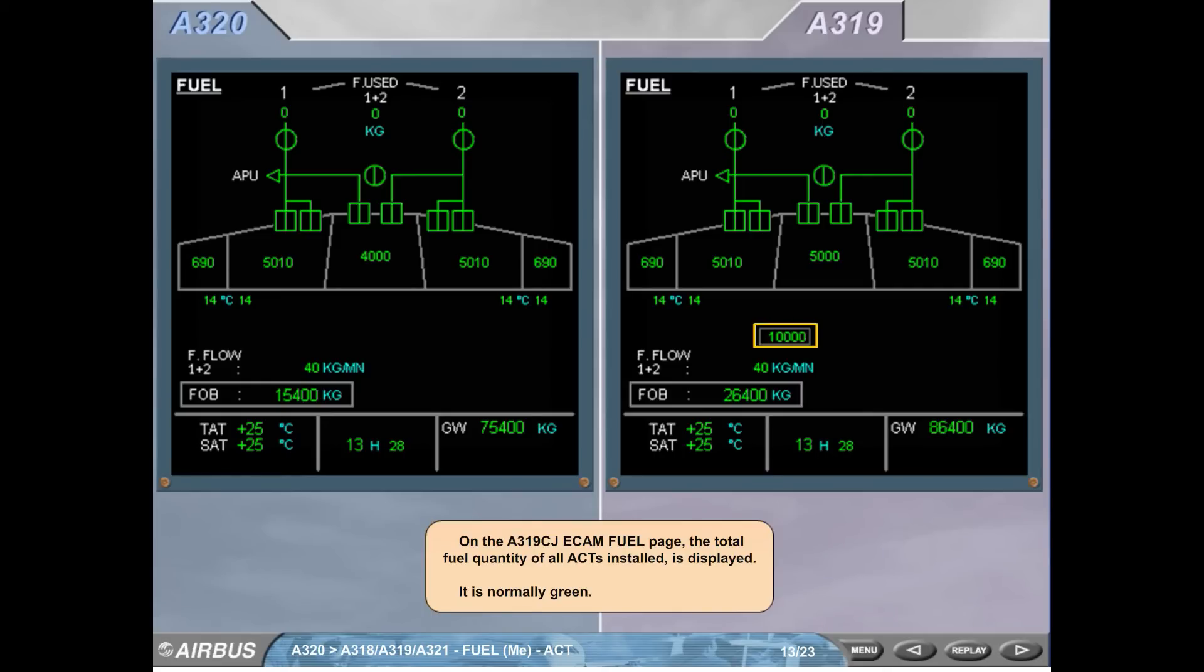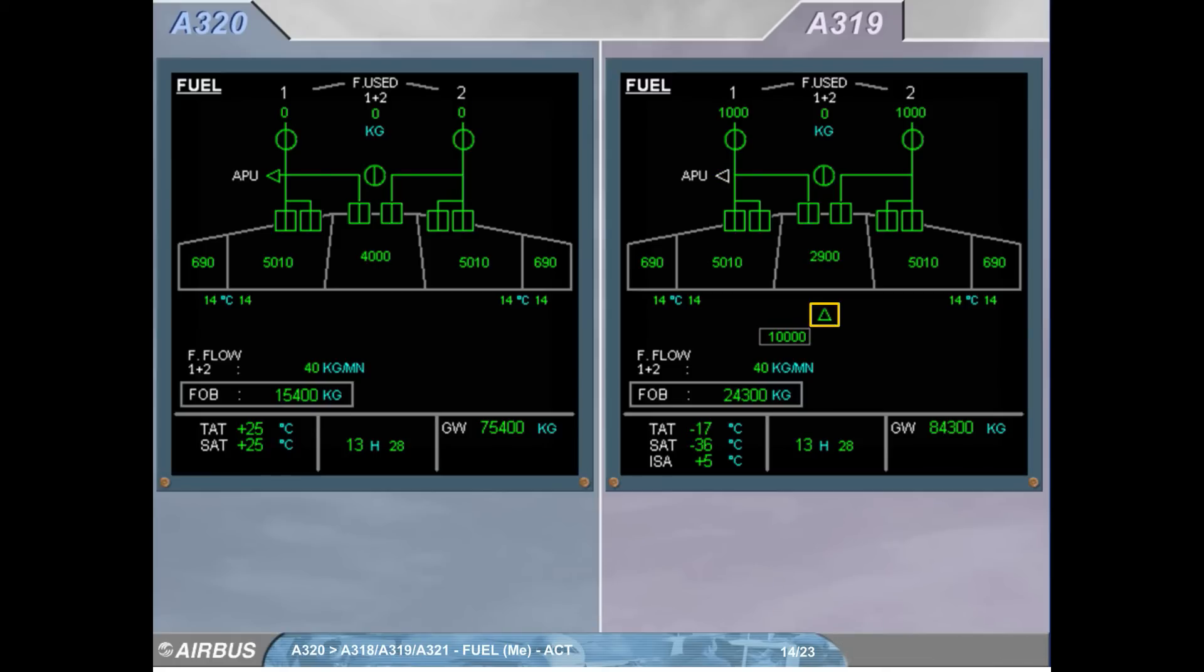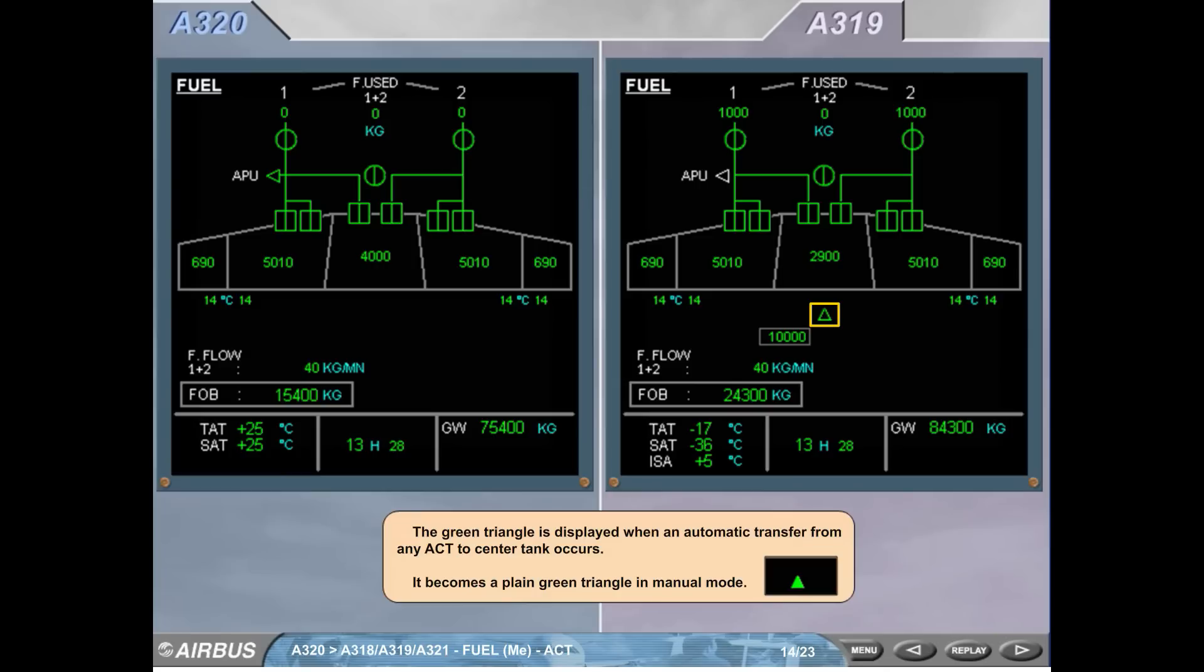On the A319CJ ECAM fuel page, the total fuel quantity of all ACTs installed is displayed. It is normally green.